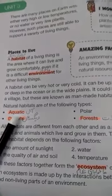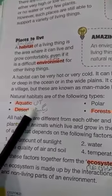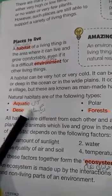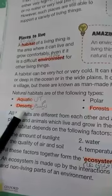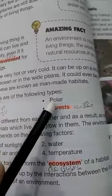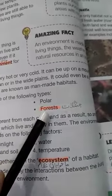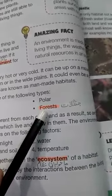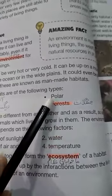One is aquatic — highlight the meaning: aabi. Next is deserts — meaning: registan. Next is polar — polar is a cold place. Fourth one is forest — highlight the meaning of forest.